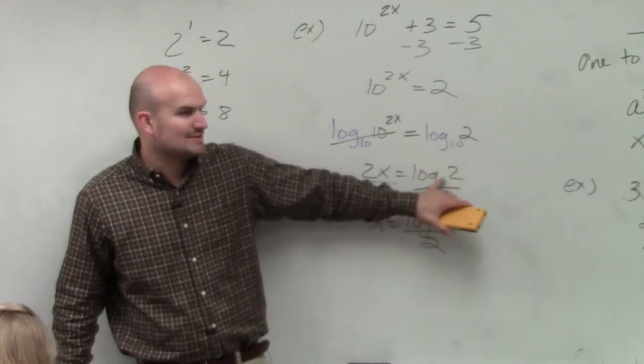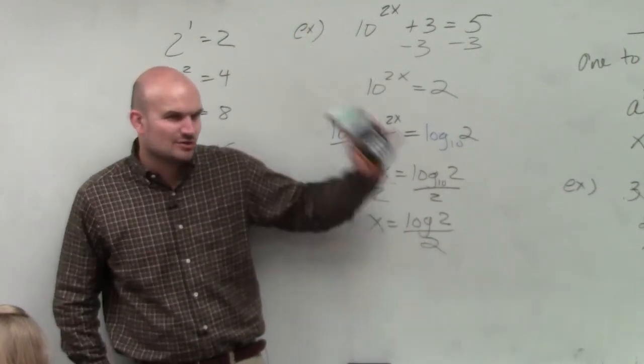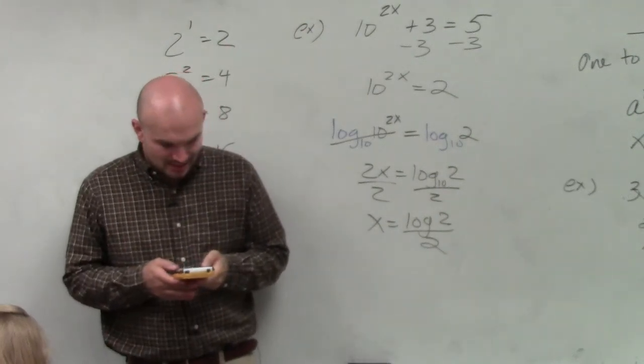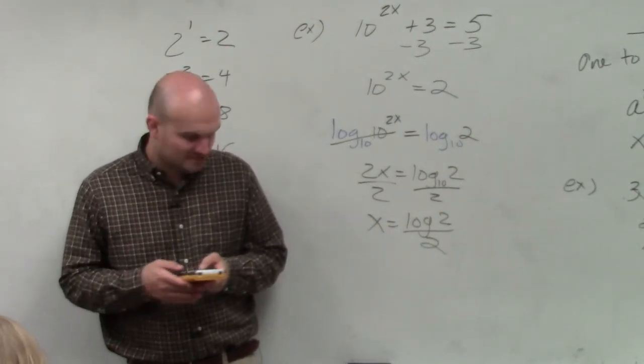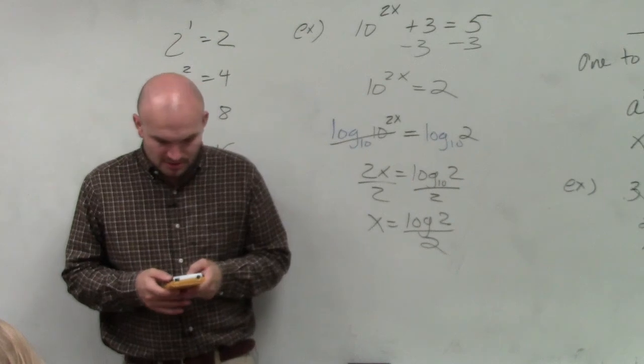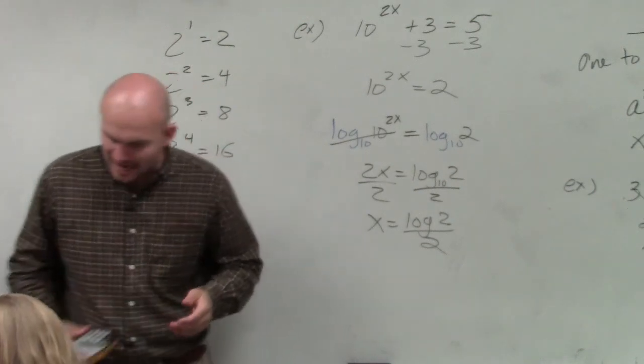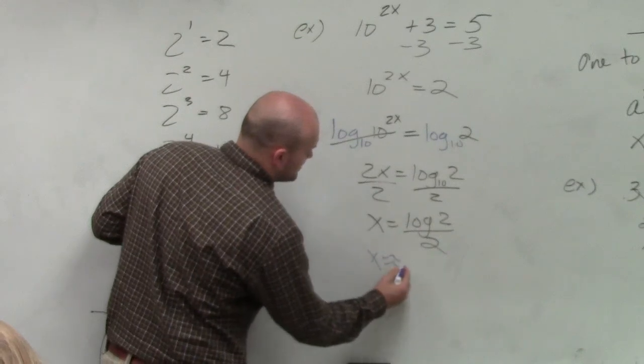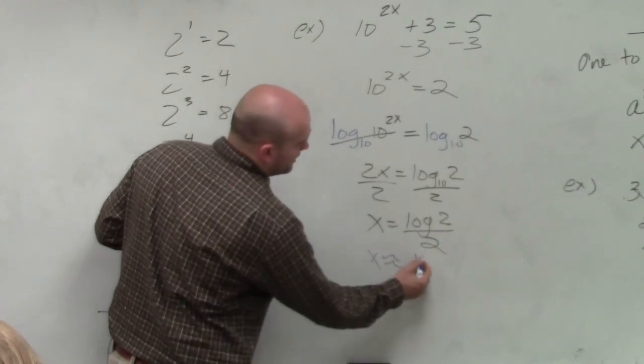So that's why I dropped the 10 because that's the only thing your calculator will do is log base 10. You just hit log of 2 divided by 2, and I get x is approximately 0.15.